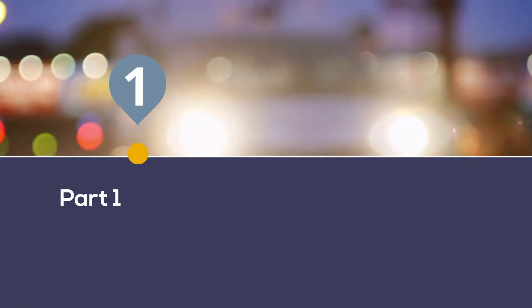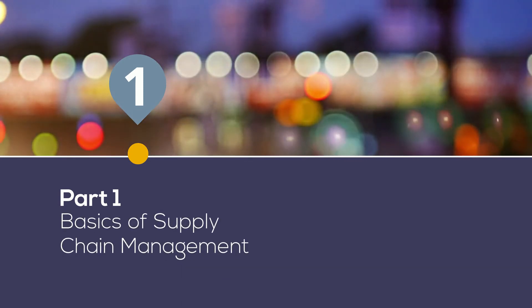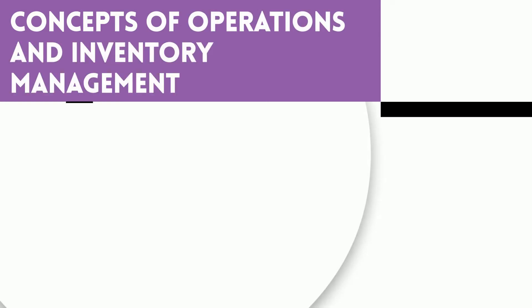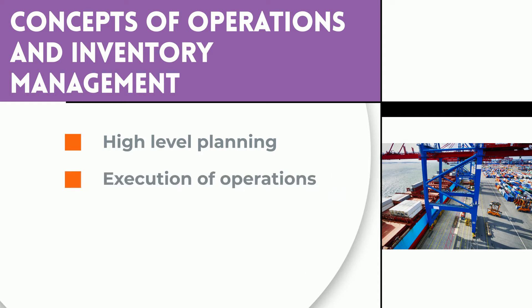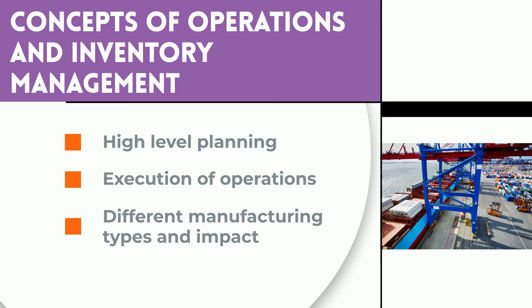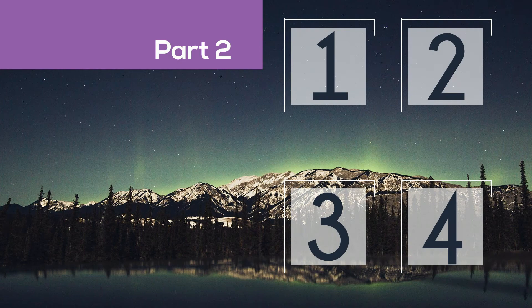The course consists of two parts. The first part is about the basics of supply chain management. It provides an overview of the concept of operations and inventory management. The scope ranges from high-level planning for product groups until the execution level of operations. You will learn about the different types of manufacturing and their impact on processes and inventory.